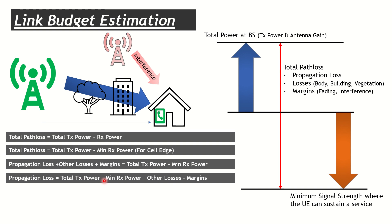Expanding the path loss into its components: propagation loss plus body loss plus building loss plus fading margin plus interference margin equals total Tx power minus minimum Rx power. Rearranging: propagation loss equals total Tx power minus minimum Rx power minus other losses minus margins. We know Tx power for our gNodeBs, we know minimum receiver sensitivity for the UE, and other losses and margins are added based on network topology such as urban, suburban, or rural.